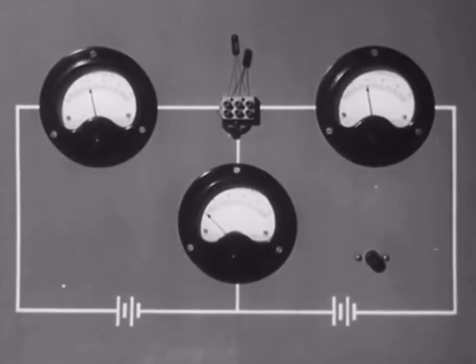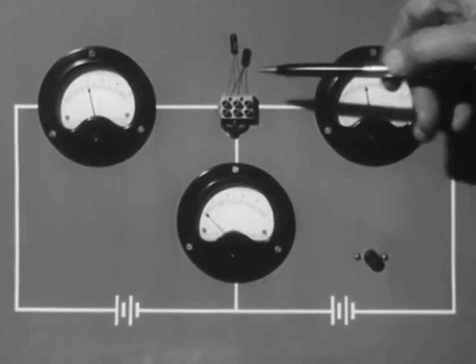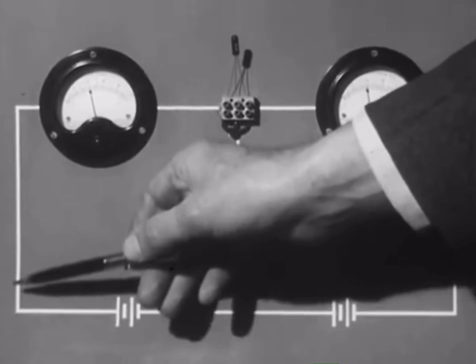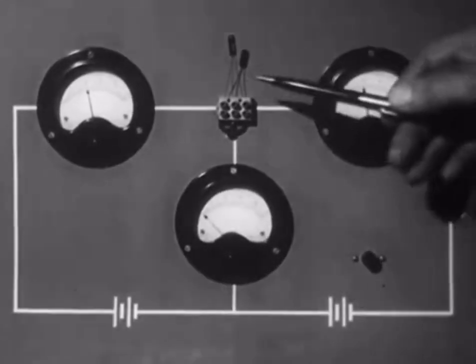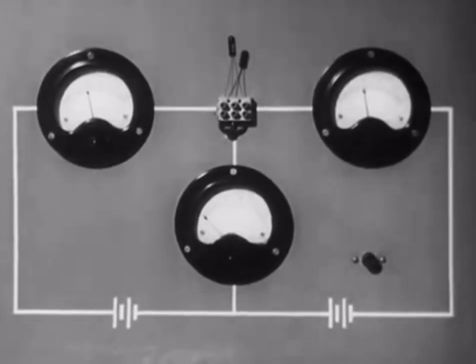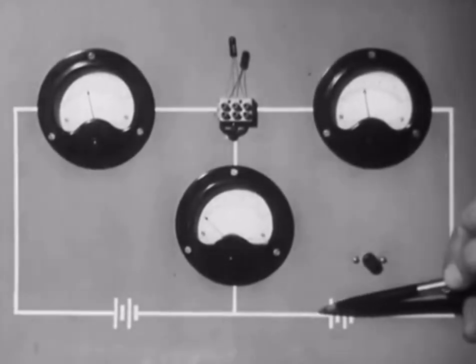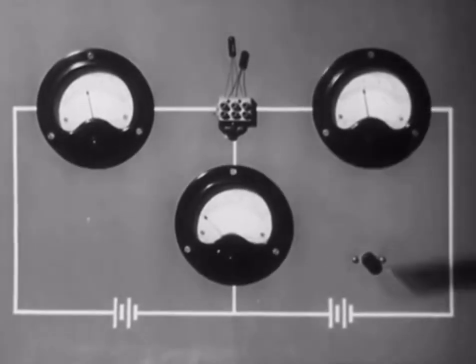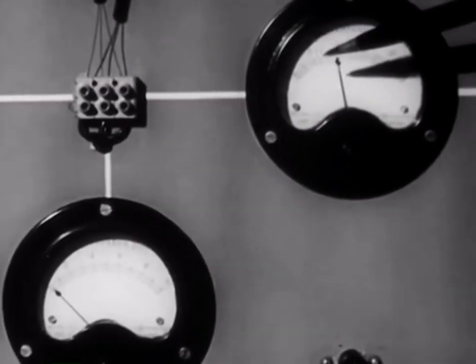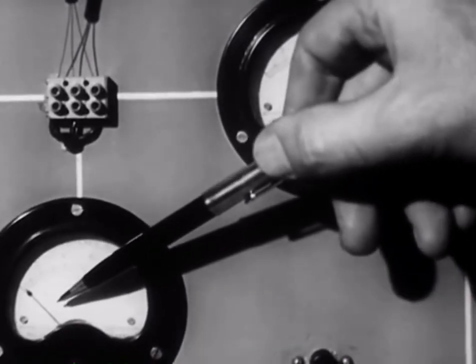And here is a transistor connected as we saw in the diagram earlier. That's the emitter, the base, and the collector. The emitter is connected through this milliammeter and the resistance to the positive pole of a battery. The base is connected through this milliammeter to the negative pole of the battery. The collector is connected through this milliammeter to the negative pole of another battery, and the positive of the battery goes to the base. The emitter current, four milliamps in this case, splits up into two parts. The collector current of about 3.8 milliamps, and the base current of about 0.2 milliamps.